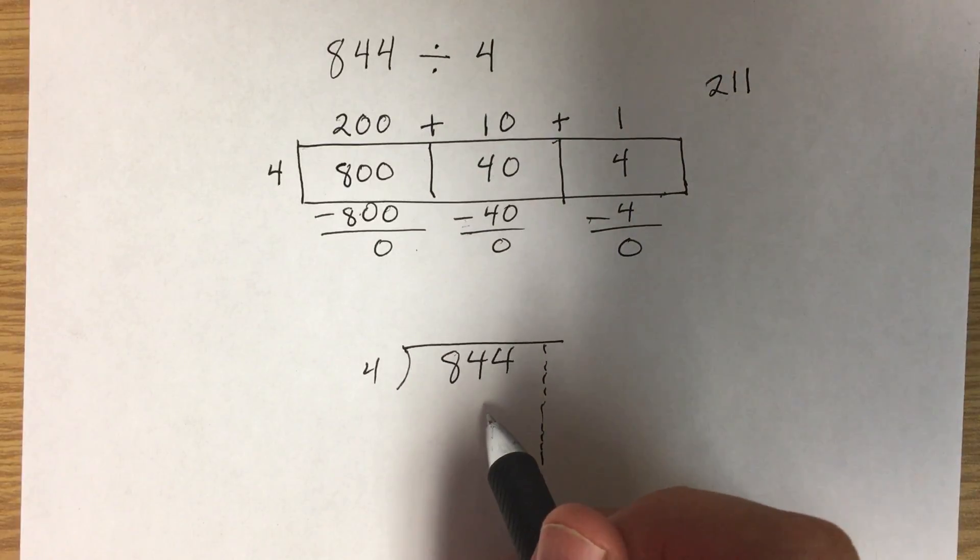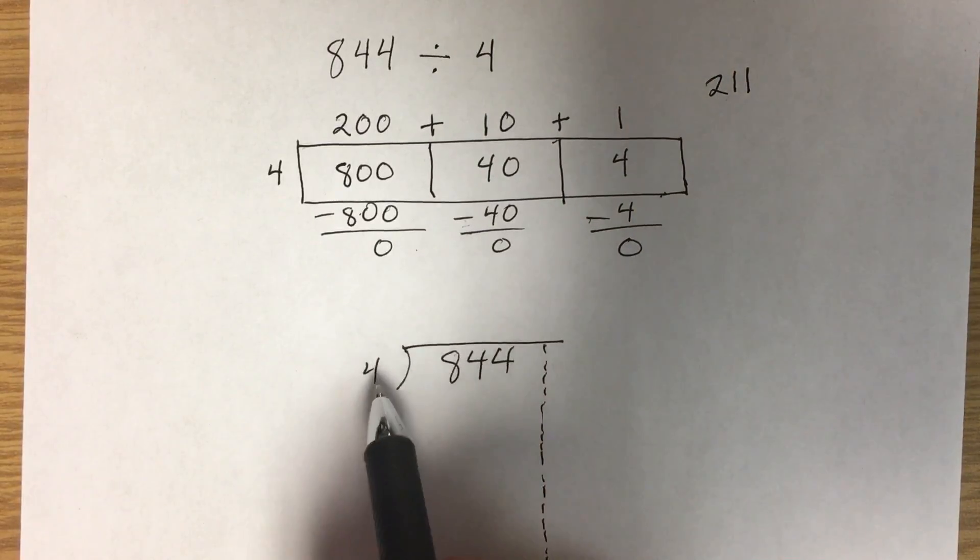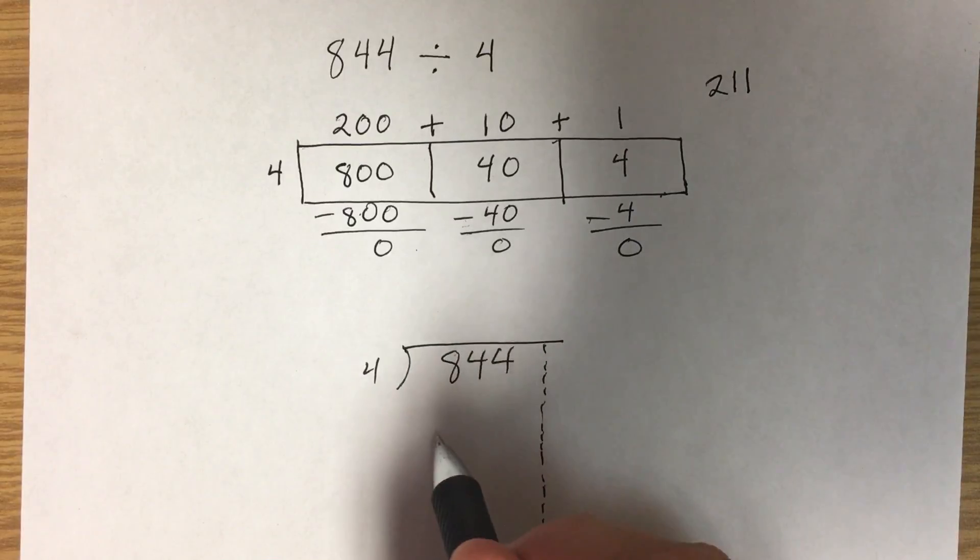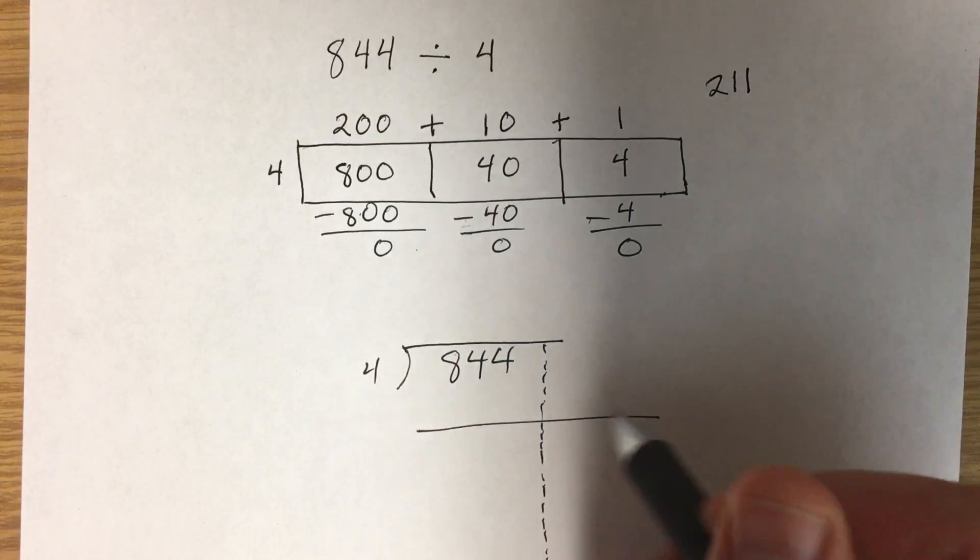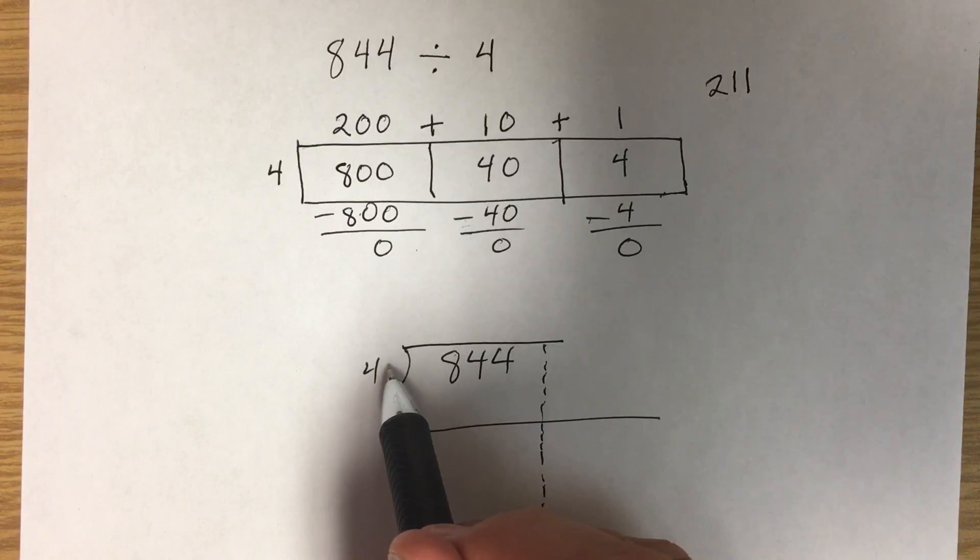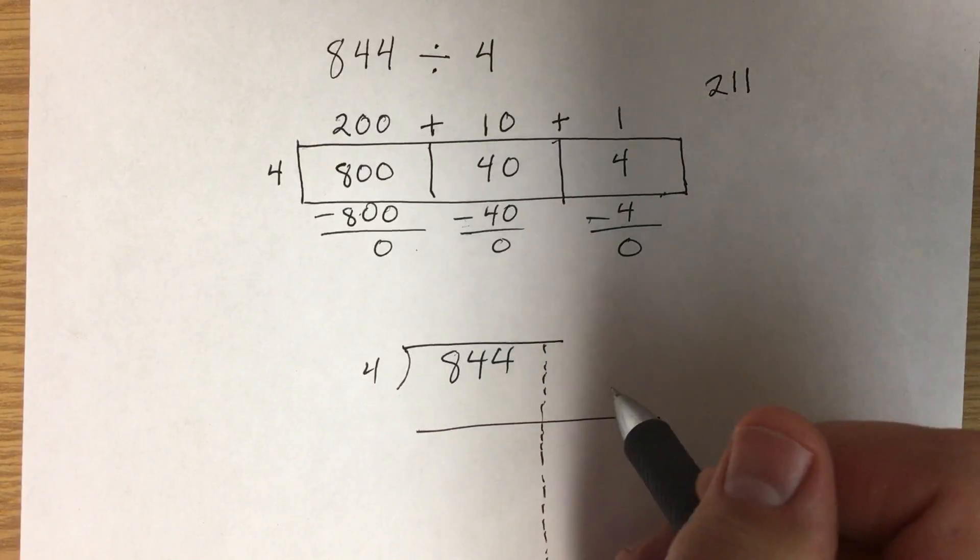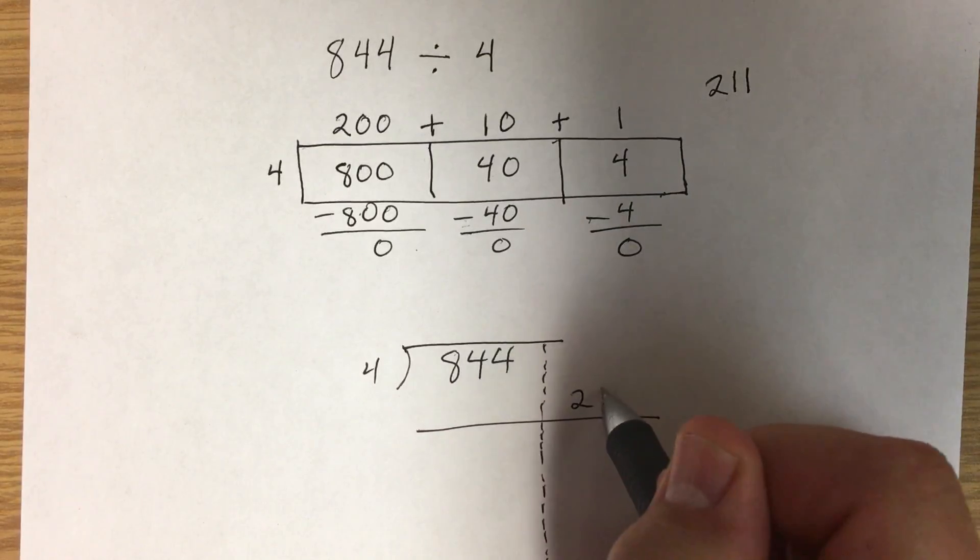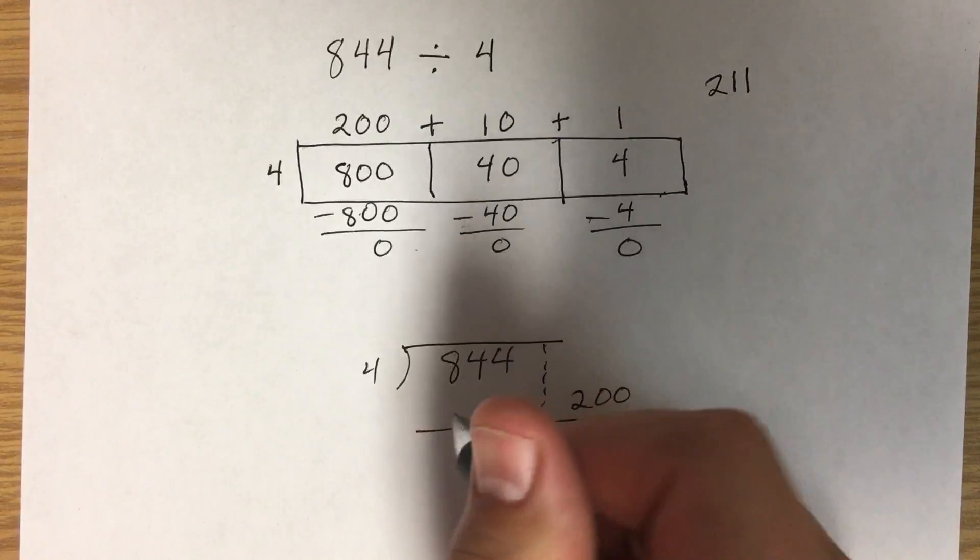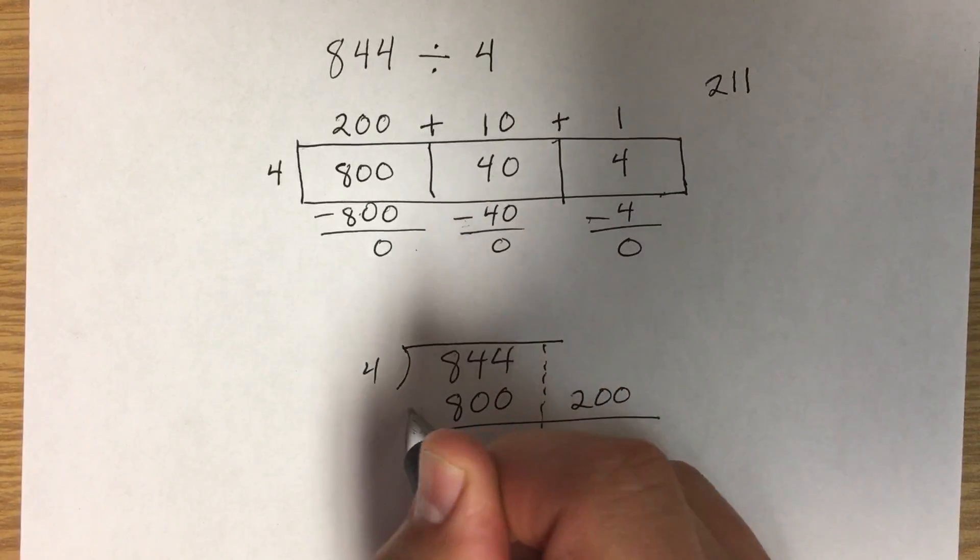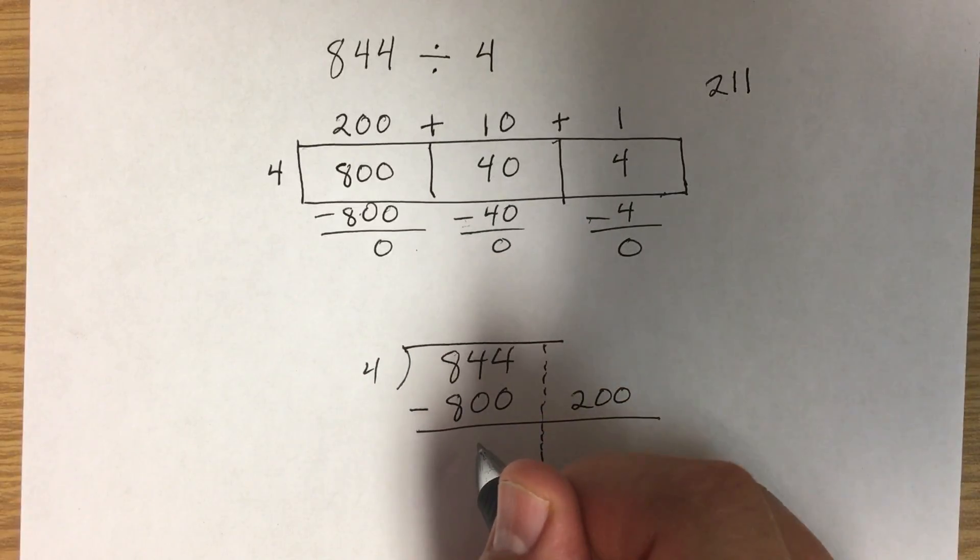We're going to think of how many hundreds times 4 can fit into 800. So we're going to go with 200. 200 times 4 is 800. We're going to subtract and bring down 44.